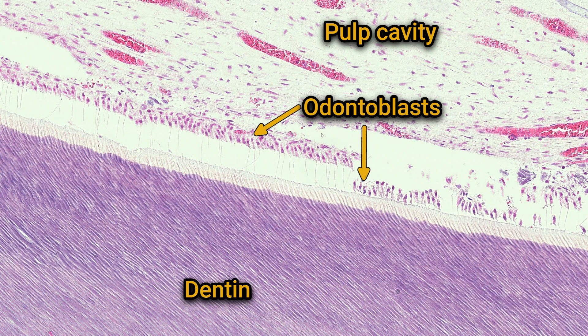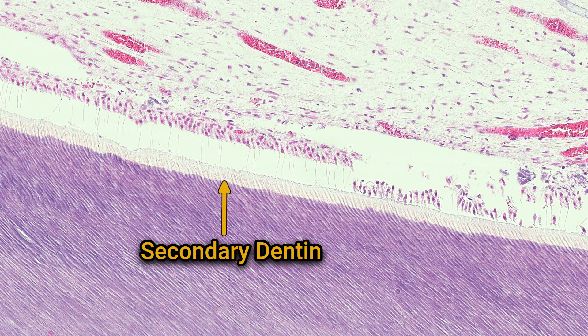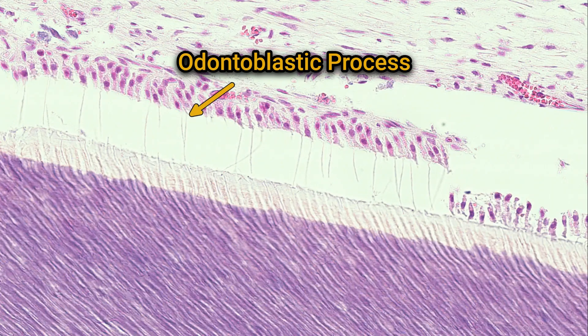After tooth formation, the odontoblasts continue to produce dentin. However, this type of dentin is less organized and is called secondary dentin. You can see the uncalcified dentin matrix as a thin, pale area just above the odontoblasts. You can even see the little cytoplasmic processes that the odontoblasts are sending off into the overlying dentin.